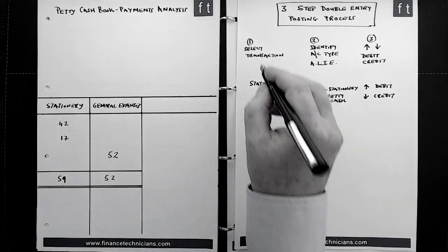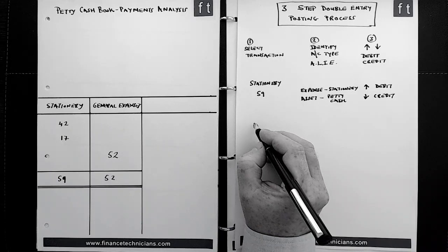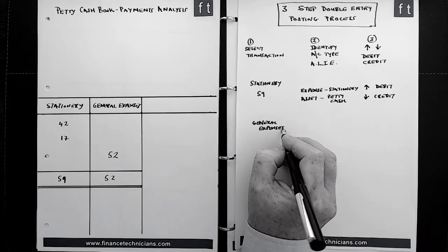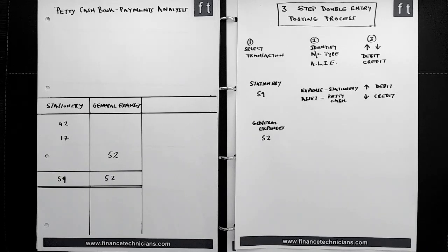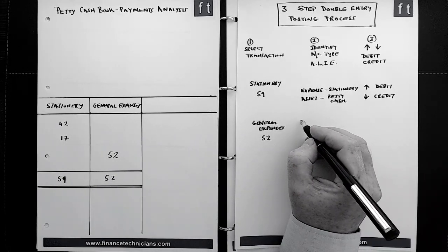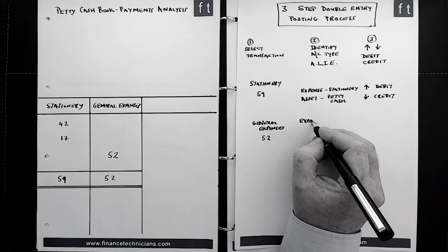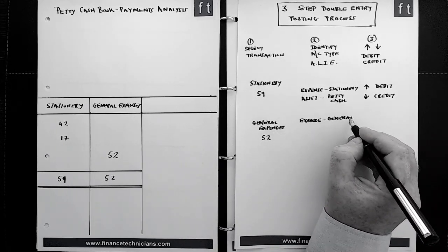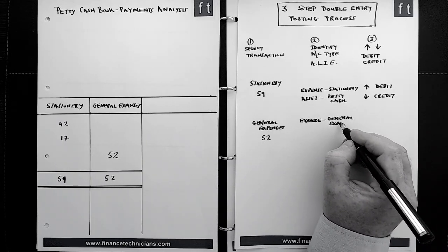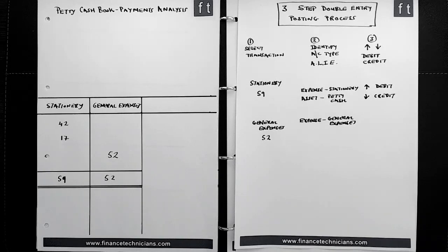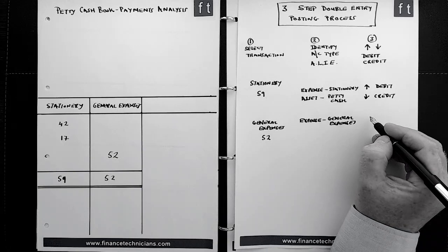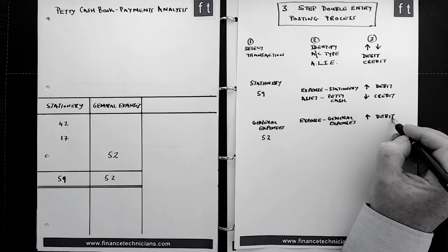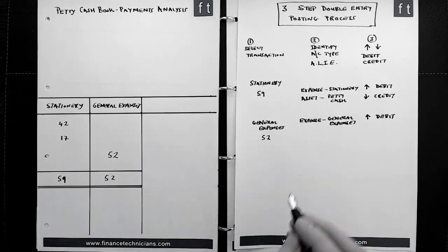The next transaction is general expenses, with a monetary value of 52. This is categorised as an expense account because general expenses are day-to-day operational running costs of a business. If we are increasing the amount of money spent on general expenses by 52, the value of the account is going to go up. To make an expense account go up in value, we record it as a debit transaction.